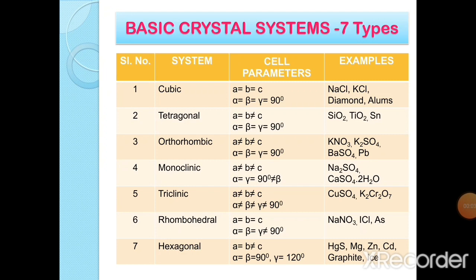There are seven basic crystal systems. First, cubic crystal system: cell parameters are a = b = c, and α = β = γ = 90°. Examples: NaCl, KCl, diamond, alums, etc. Second, tetragonal crystal system: a = b ≠ c, and α = β = γ = 90°. Examples: SiO₂, TiO₂, Sn, etc. Third, orthorhombic crystal system: a ≠ b ≠ c, and α = β = γ = 90°. Examples: KNO₃, K₂SO₄, PbSO₄, etc.